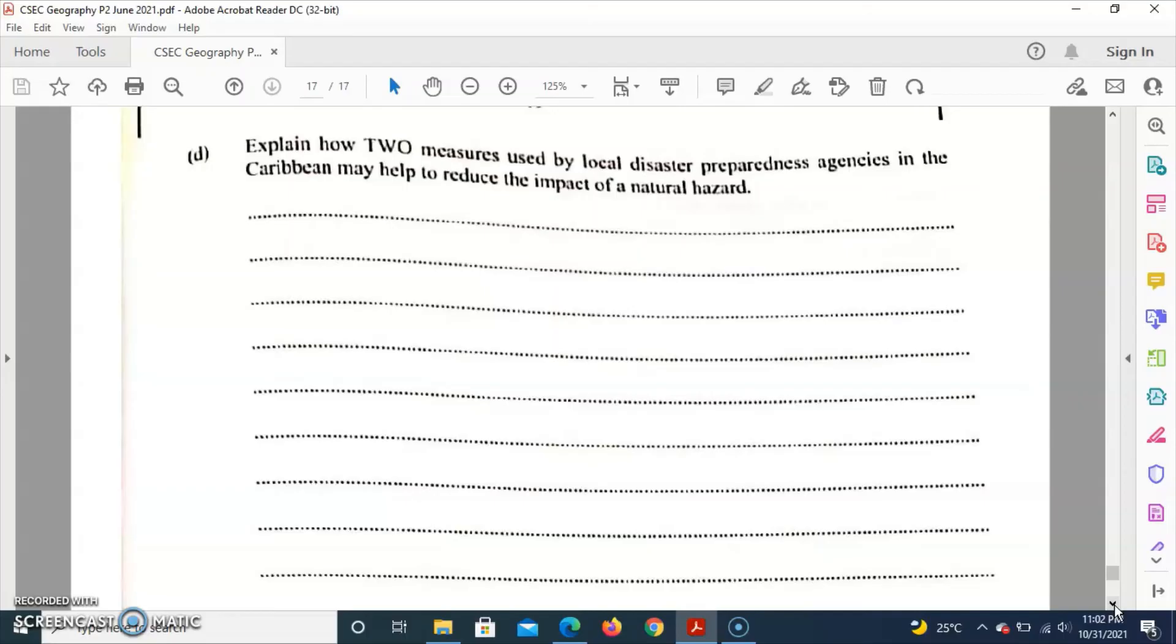The local agencies also work alongside other organizations to basically provide the necessary updates on the different hazards. They provide information on volcanic monitoring, earthquake predictions, and hurricane forecasting so that these local agencies can also update the population so that we are hazard ready.